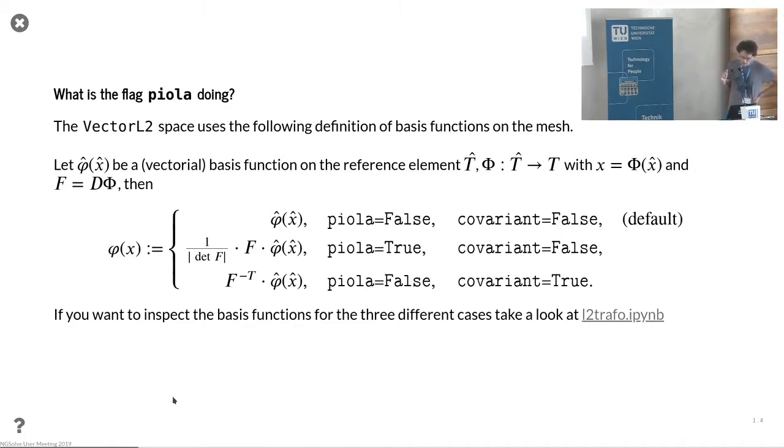A remark on this piola flag: it essentially means how we evaluate functions on the physical domain depending on the function on the reference domain. If you don't use any flag, you get the direct mapping. With piola true, you get the piola transformation, and you can also do covariant transformation for h curl problems.